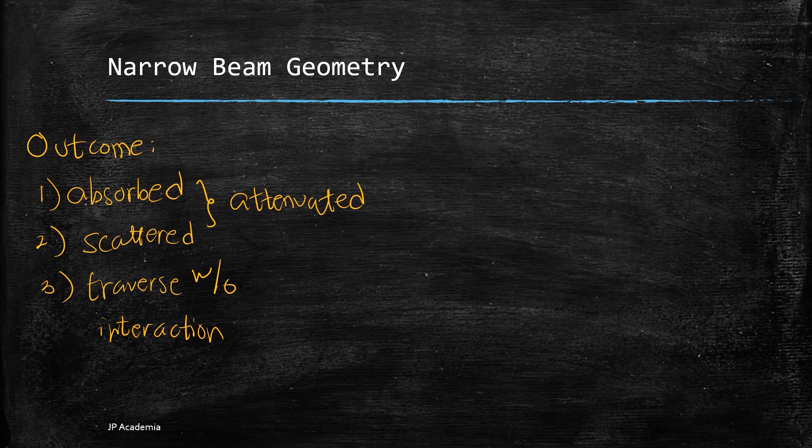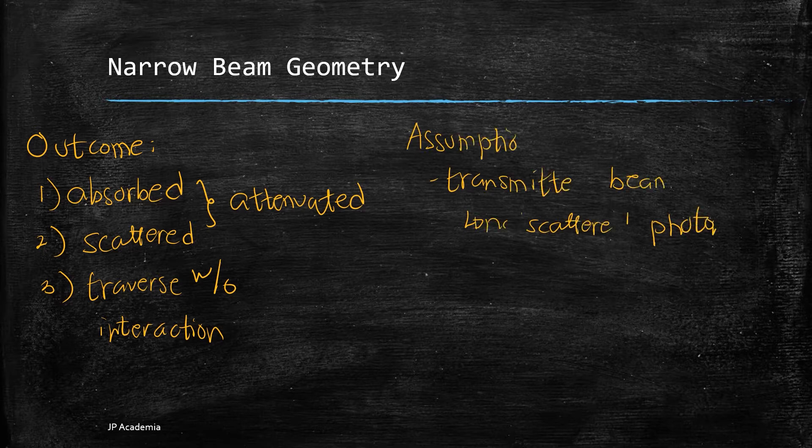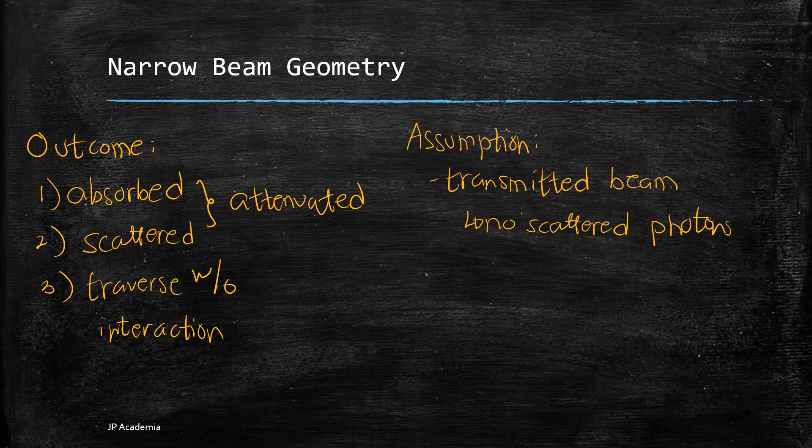The probability in which a photon interaction is not small depends on the geometric arrangement of the photon source, absorber, and detector. The assumption here is that the beam is narrow and the transmitted beam contains no scattered photons. So that's important, no scattered photons. This is called the narrow beam geometry.